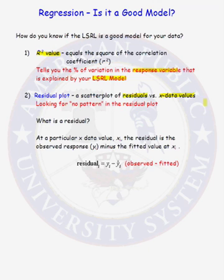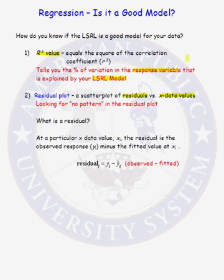The residual plot takes precedence over an r-squared value. You are hoping that your r-squared value is high, close to 100 percent. If it is a high number close to 100 percent, then the majority of the variation in your response variable is explained by your least squared regression model. So you are looking for a high r-squared value, but again, the residual plot takes precedence.